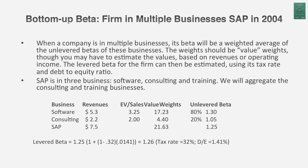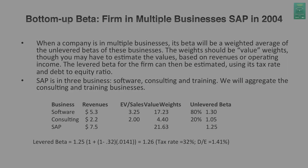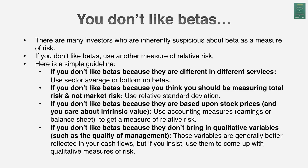I used those weights to compute a weighted average unlevered beta — the beta for the businesses SAP is in. Then, one final step: I looked up SAP's debt-to-equity ratio. SAP doesn't use a lot of debt — its debt-to-equity ratio is only 1.4%. Using that ratio and the German corporate tax rate, I came up with a levered beta for SAP's equity. That's my estimate for beta, and that's what I would use when valuing SAP — not the regression beta.